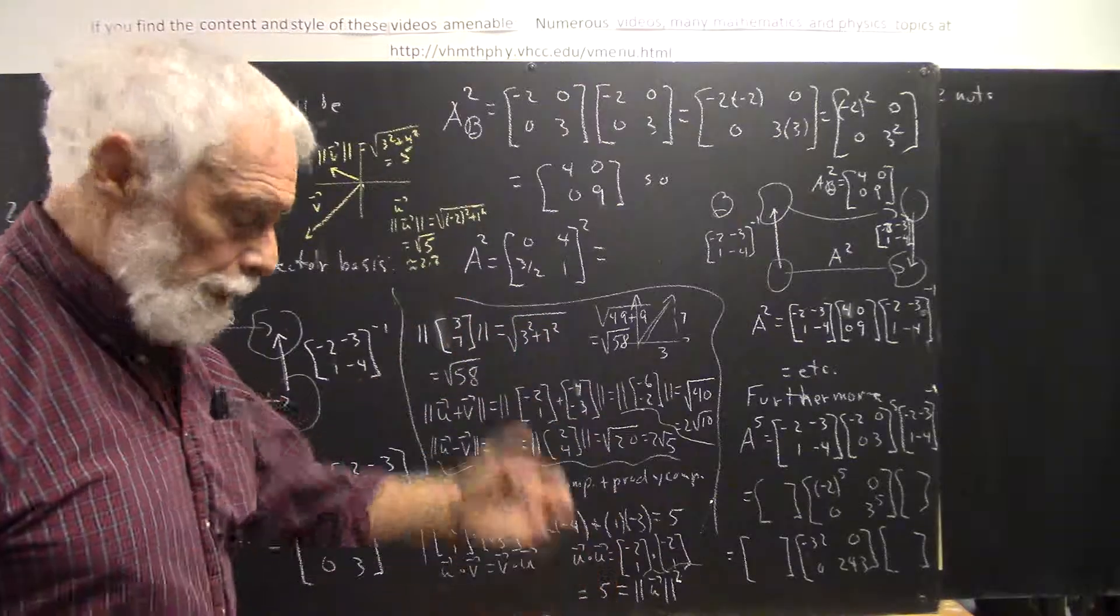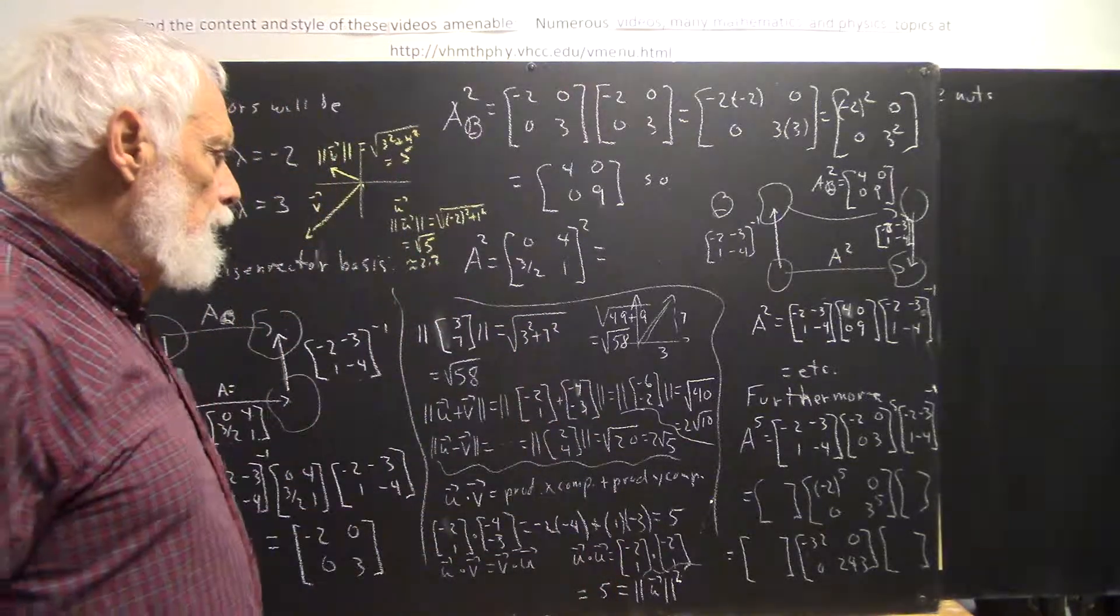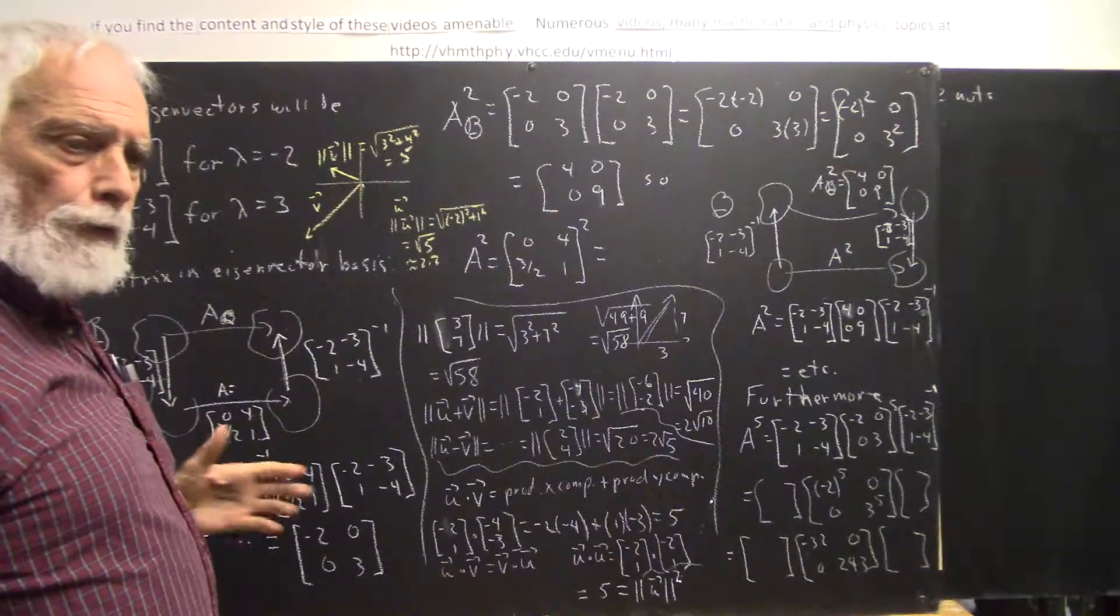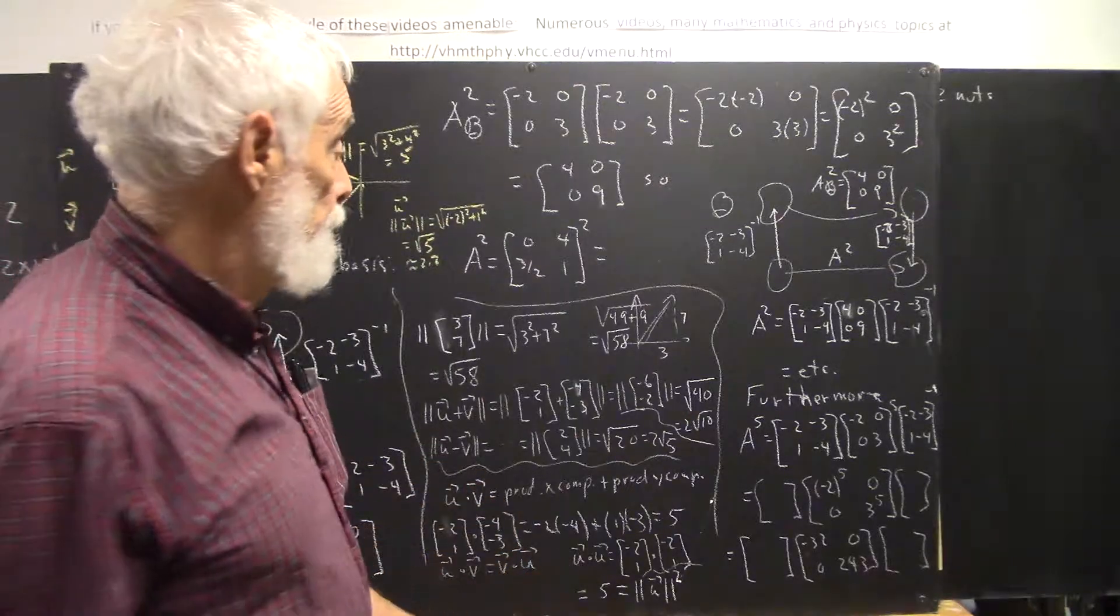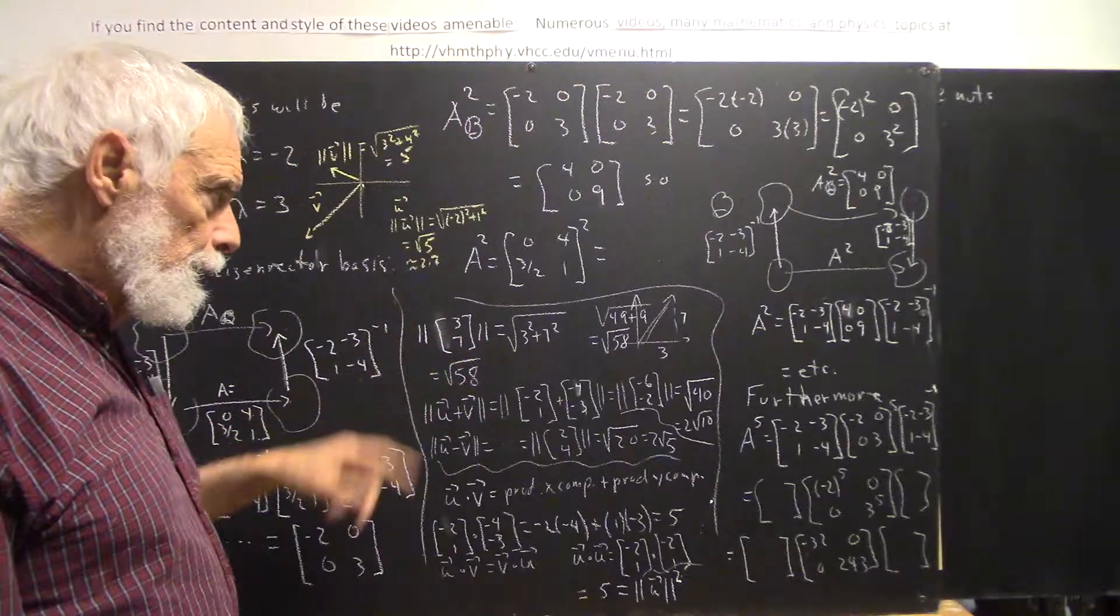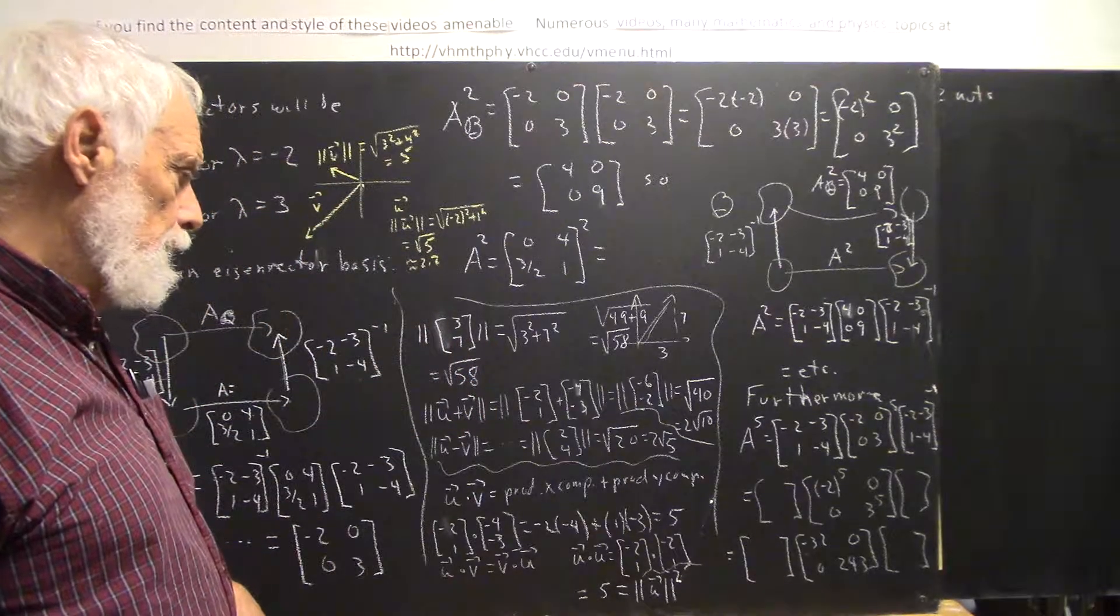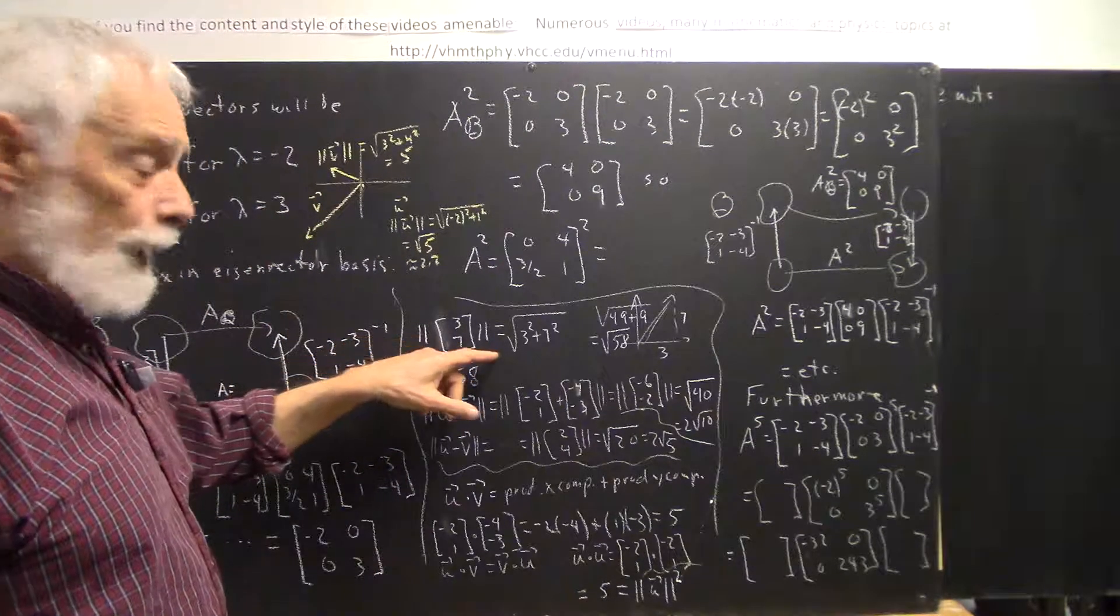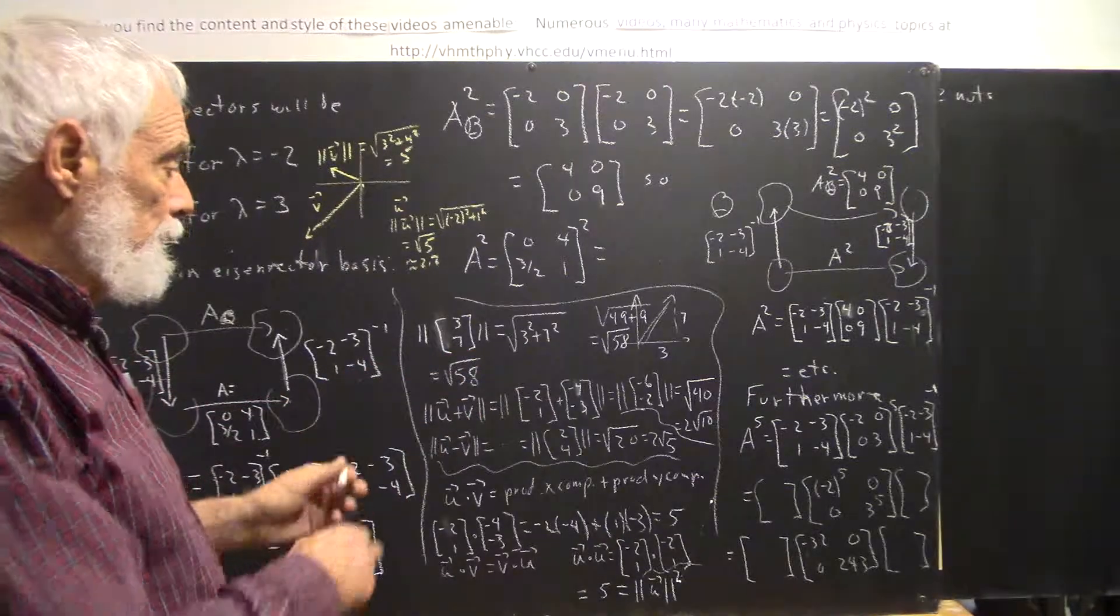Now, just a quick introduction to a couple of ideas. First of all, the idea of the magnitude of a vector. Now these aren't ones, these are magnitude signs. I probably should have made them look a little bit more like that, but it's like an absolute value except we use kind of a double absolute value sign.